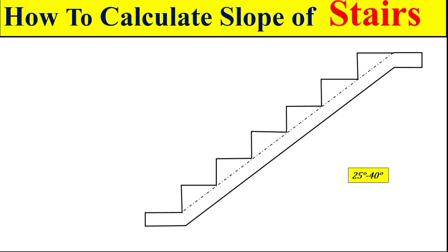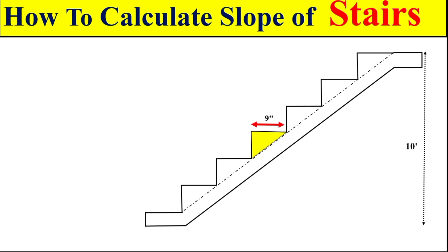Dear students, let's suppose we have a stair. The total height, or you can say the total story height for the stair, is 10 feet. From the given data, it is also mentioned that the total size of the tread is 9 inches and the total size of the riser is 6 inches. We will calculate the total slope for the staircase using the tangent approach.